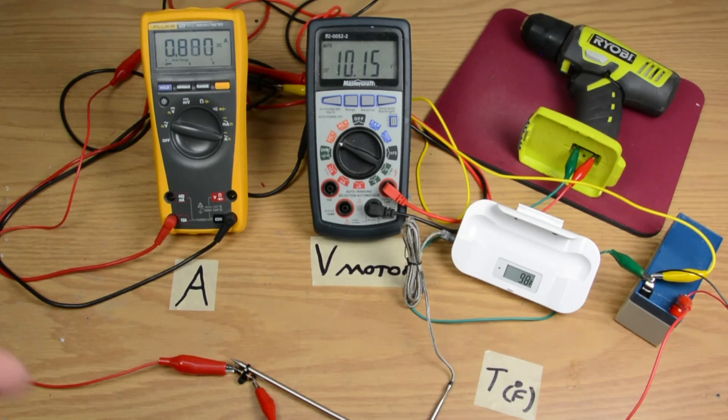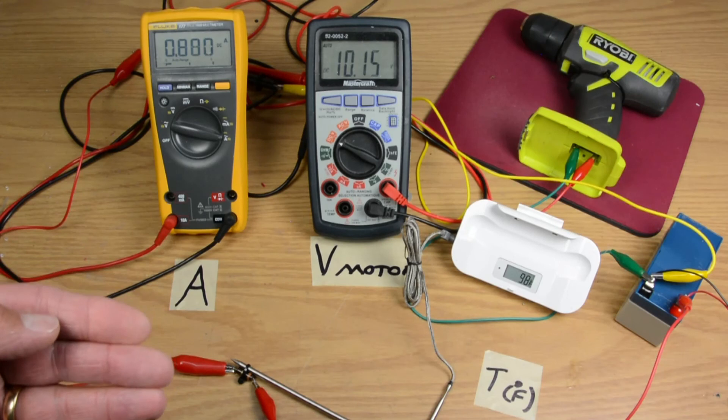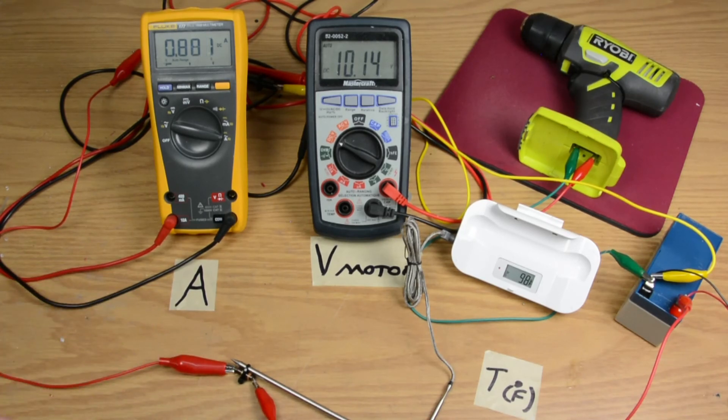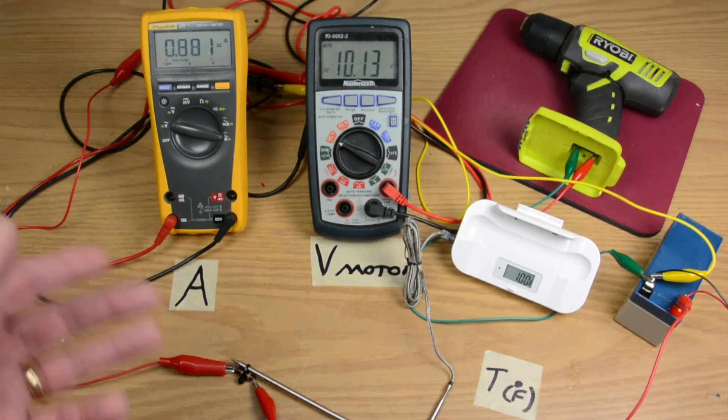And this keeps going and going and going and hopefully at some point whatever you've got at the end of this bad connection can catch up enough that it does what it needs to do. But most electricians that we work with will tell you that under voltage situations with things like appliances will generally burn out the appliance. And this is the reason why.